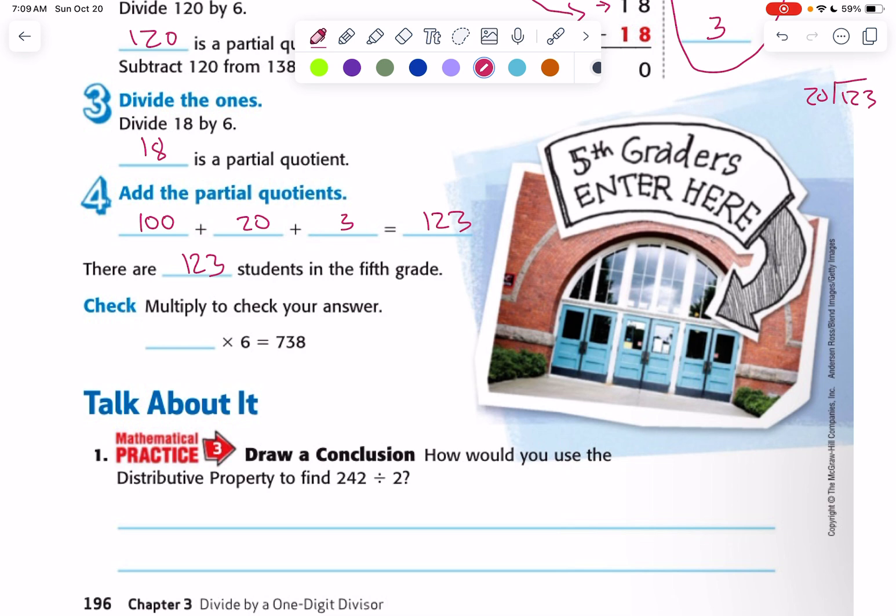Multiply to check your answer. It's 123 times 6, 7, and 38. 6 times 3 is 18. 6 times 2 is 12, 13. And 6 times 1 is 6 plus 1 is 7. So that checks.